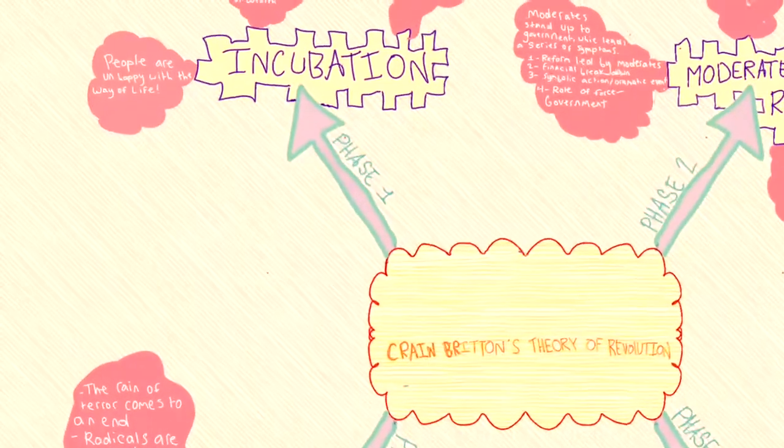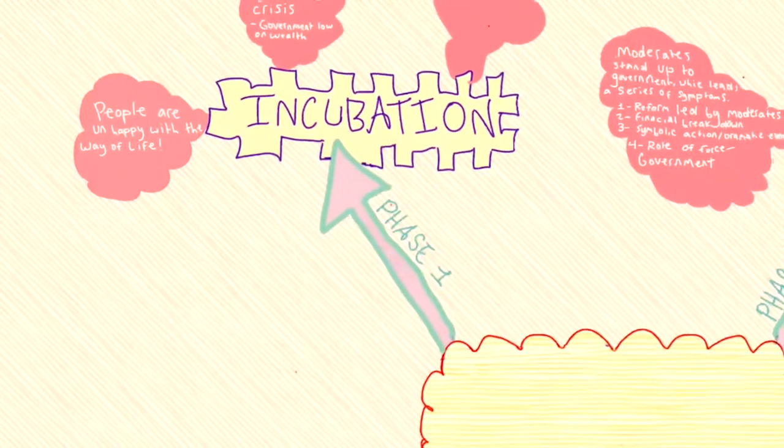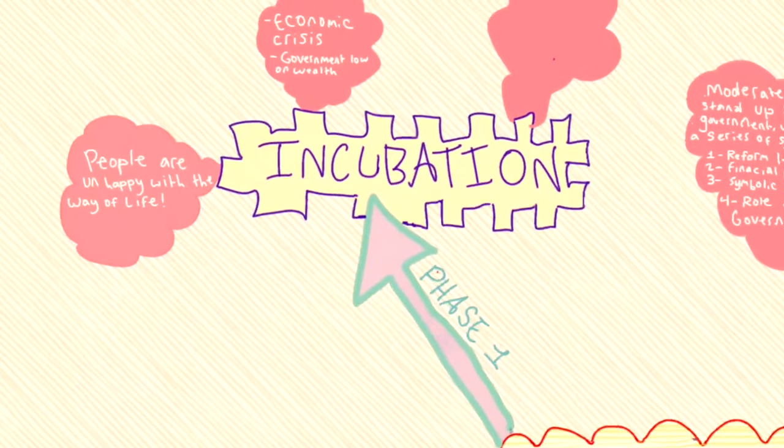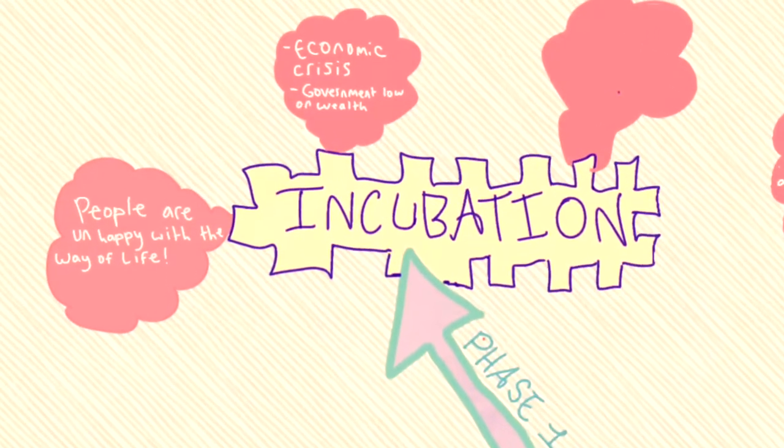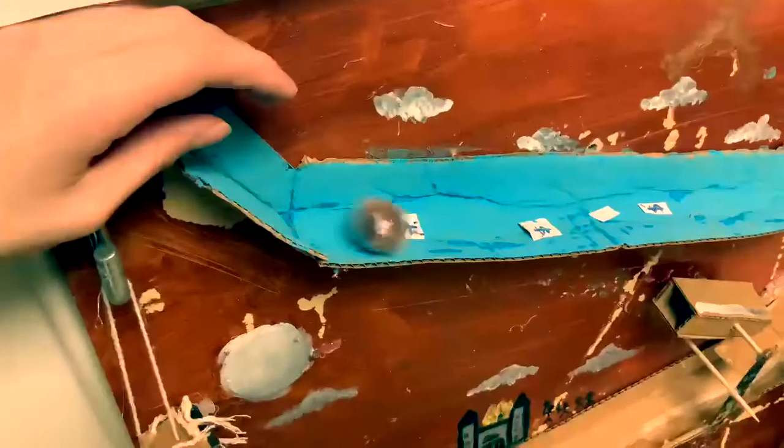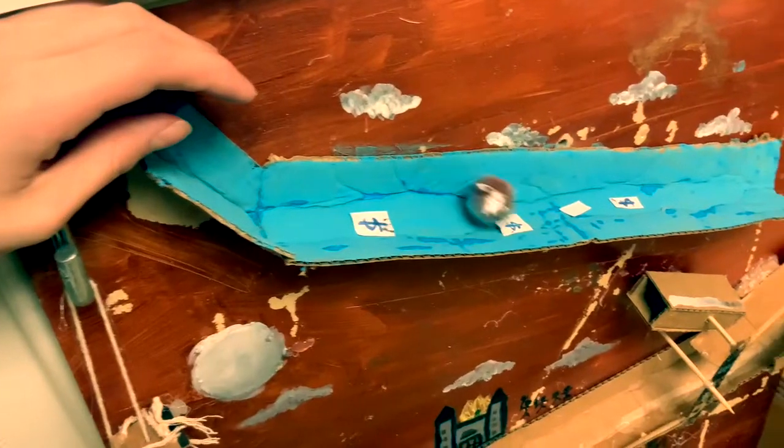The first phase is the incubation phase. This is when the problem is slowly growing. In our machine, this red marble with tape on it represents the government taking taxes due to its low wealth.